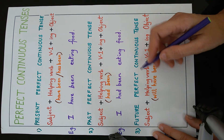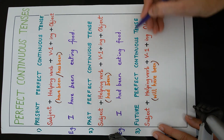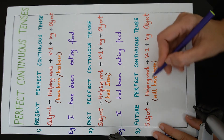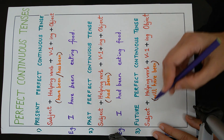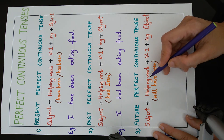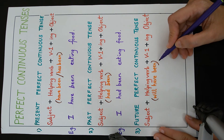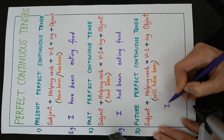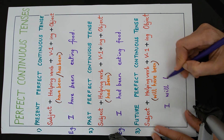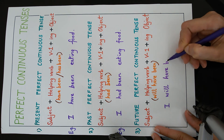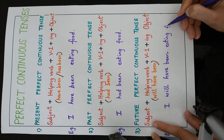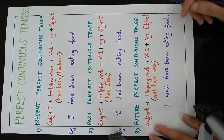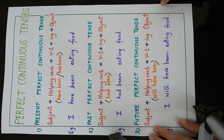Now we come to the last one, future perfect continuous tense. The formula is subject plus helping verb plus V1 plus 'ing' plus object. Because it is a future perfect tense, we use the helping verb 'will have been'. The sentence is: I will have been eating food. We have completed all 12 types of tenses. Thank you for watching my video.